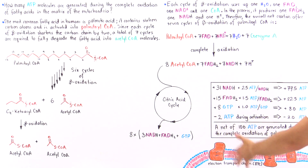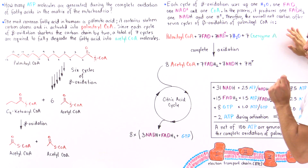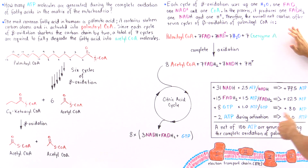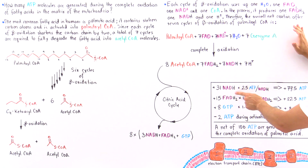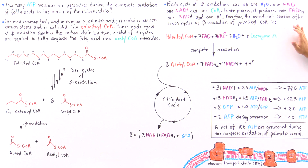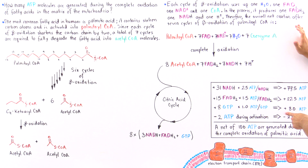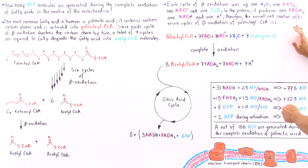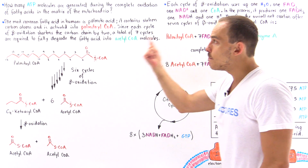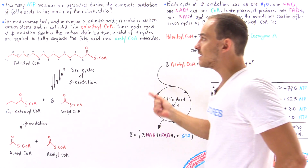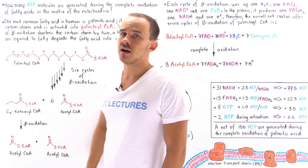Calculating the ATP yield: 31 NADH × 2.5 ATP = 77.5 ATP; 15 FADH2 × 1.5 ATP = 22.5 ATP; 8 GTP × 1 = 8 ATP. Subtracting the 2 ATP used during activation gives 108 − 2 = 106 ATP molecules net. This is the total number of ATP molecules generated when palmitic acid, the most common fatty acid in humans, is completely oxidized within the mitochondrial matrix of our cells.